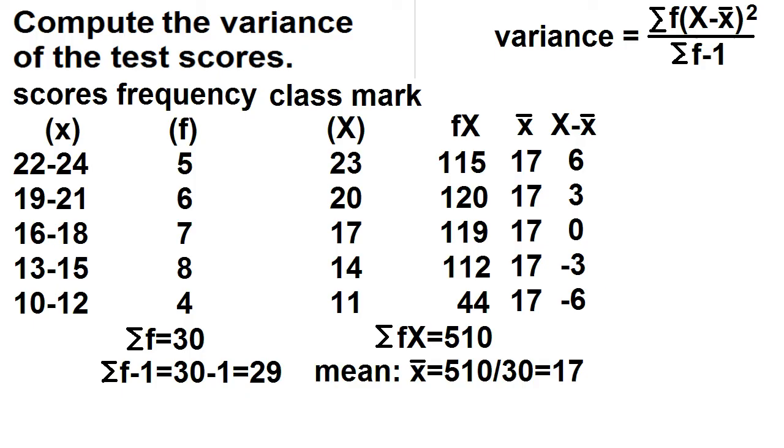Let's add another column for the square of the deviation. 6 times 6 is 36. 3 times 3 is 9. 0 times 0 is 0. Negative 3 times negative 3 is 9. Negative 6 times negative 6 is 36.